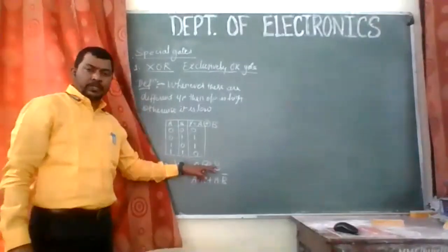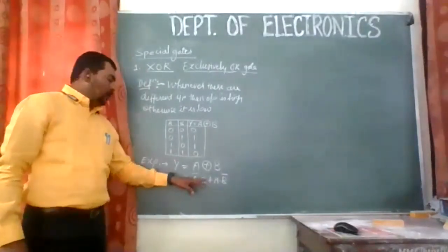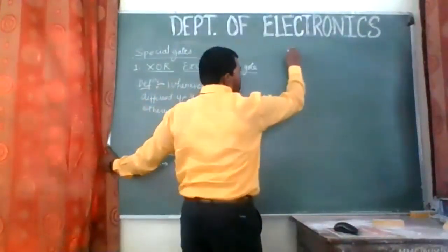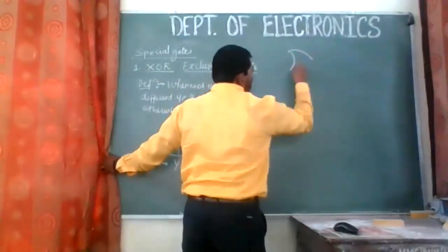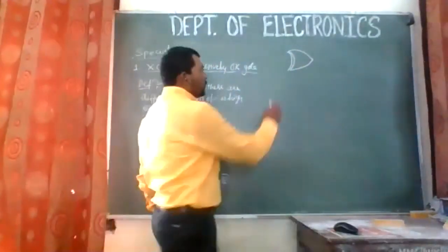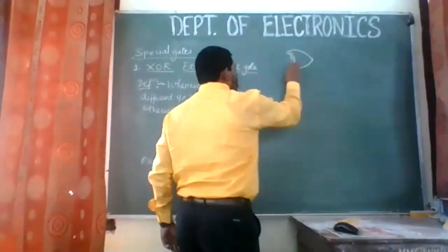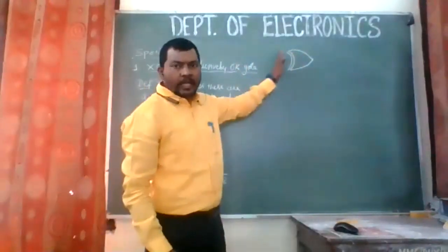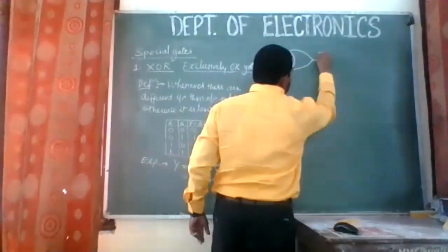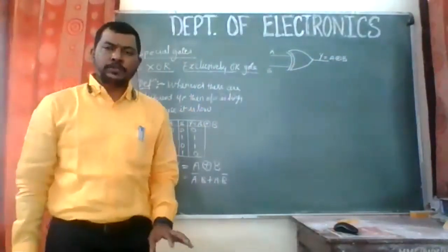Y = A XOR B can also be written in simplified form as A̅·B + A·B̅. The symbol of the XOR gate is similar to the OR gate — just a basic difference that we add one more line in front of it. That gives us the symbol of the XOR gate with two inputs A and B, and output Y = A XOR B.